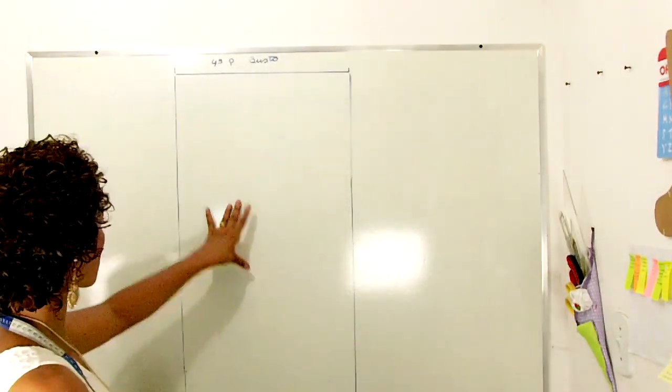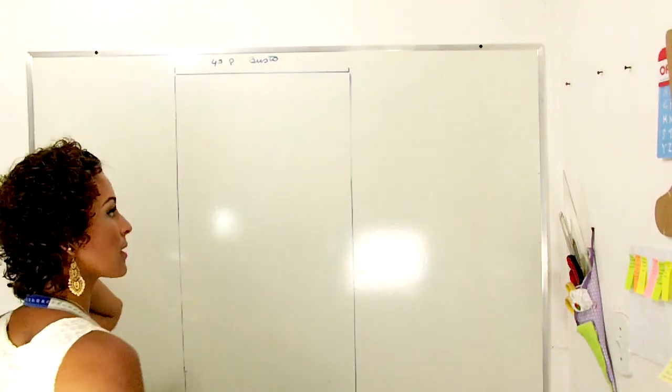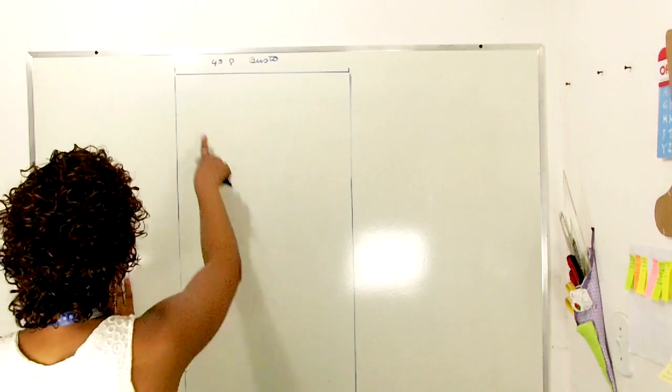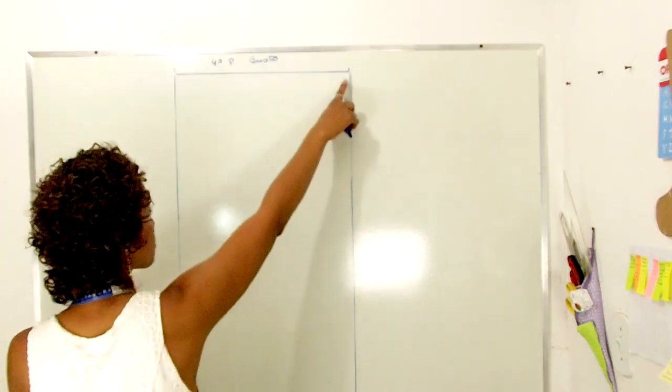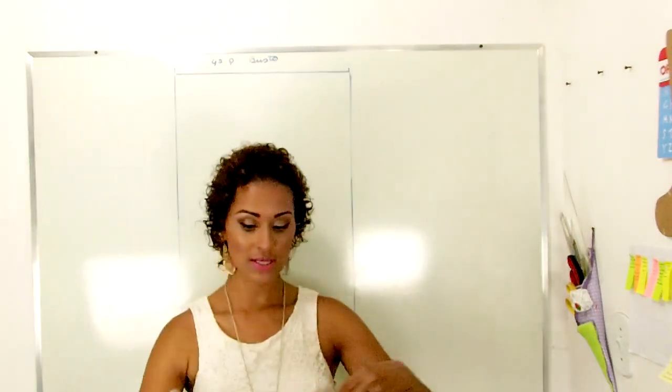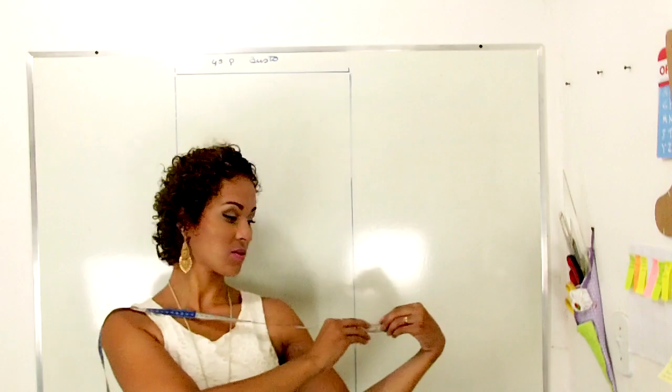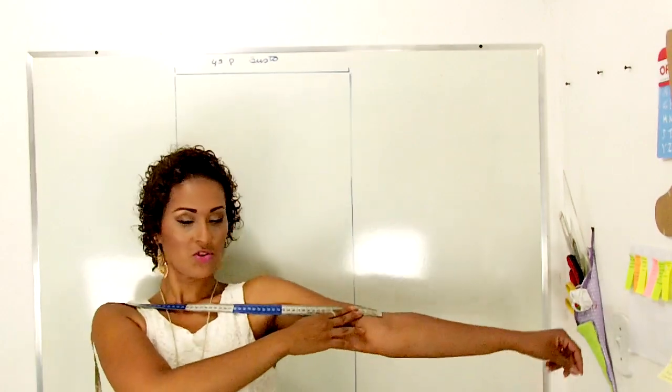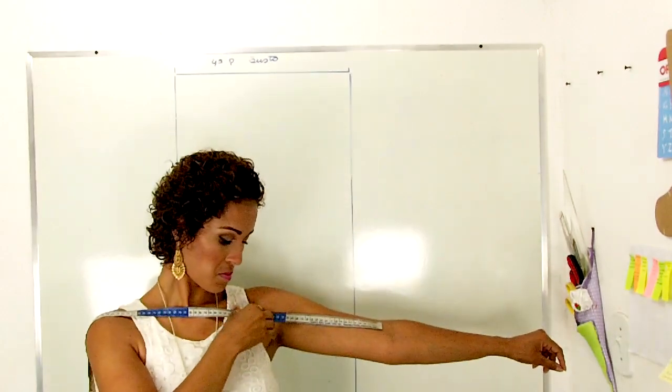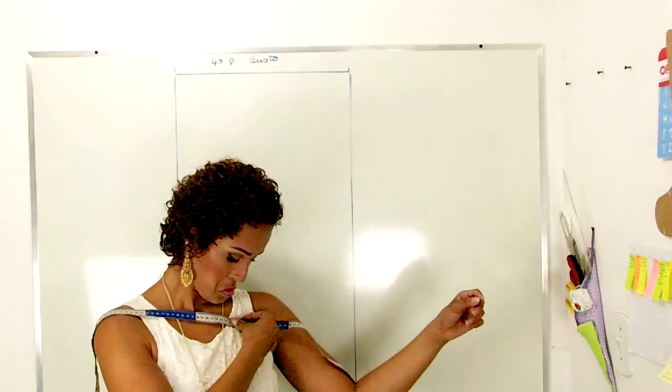Tá aqui o meu retângulo inicial, com o comprimento da peça, e a largura na quarta parte que você vai querer. Aí, a gente vai abrir aqui, na verdade, eu vou medir da manga para dentro. Da manga para dentro, vai ser aqui, caso você esteja sozinha como eu, para você conseguir medir.